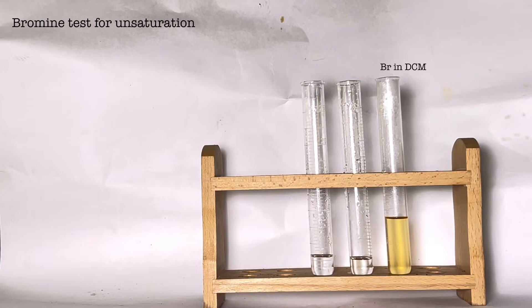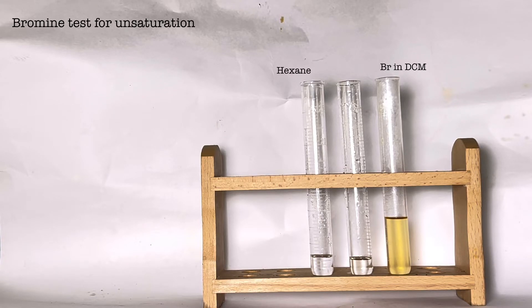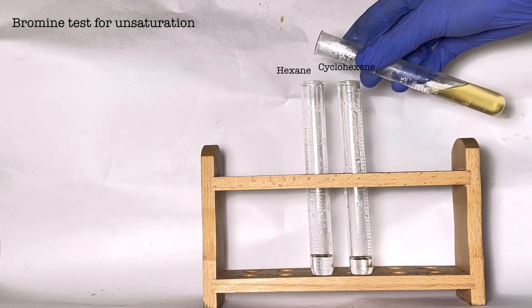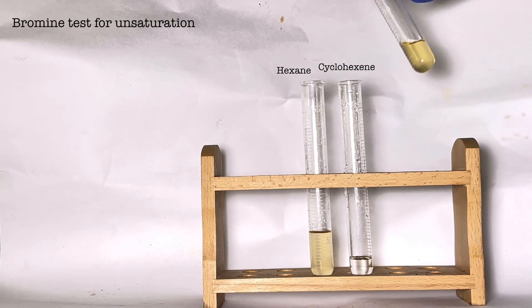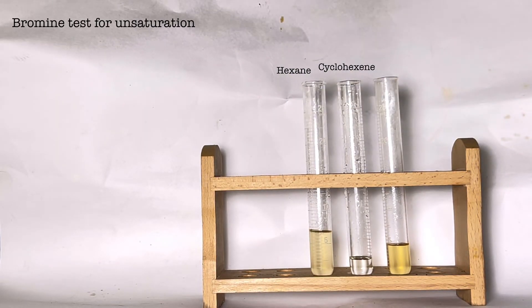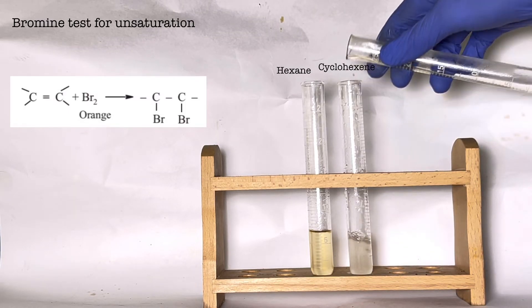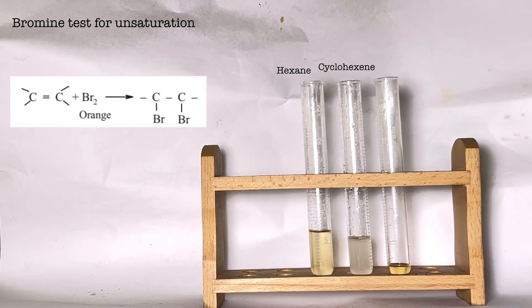To the test tube on the extreme right we have dichloromethane with bromine dissolved in it. To the extreme left we have an alkane, that is hexane. And in the center test tube we have cyclohexene. On adding the bromine solution to hexane, nothing happens. But when it is added to cyclohexene, the yellow-orange color is discharged, confirming unsaturation.